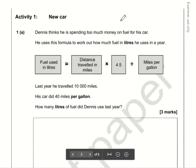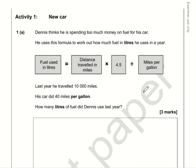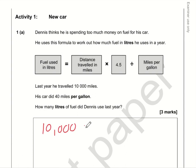Dennis thinks he's spending too much money on fuel for his car. He uses this formula to work out how much fuel in litres he uses in a year. The fuel used in litres is the distance travelled in miles multiplied by 4.5, then divided by the miles per gallon. The distance travelled is 10,000 miles, so we need to multiply that by 4.5.